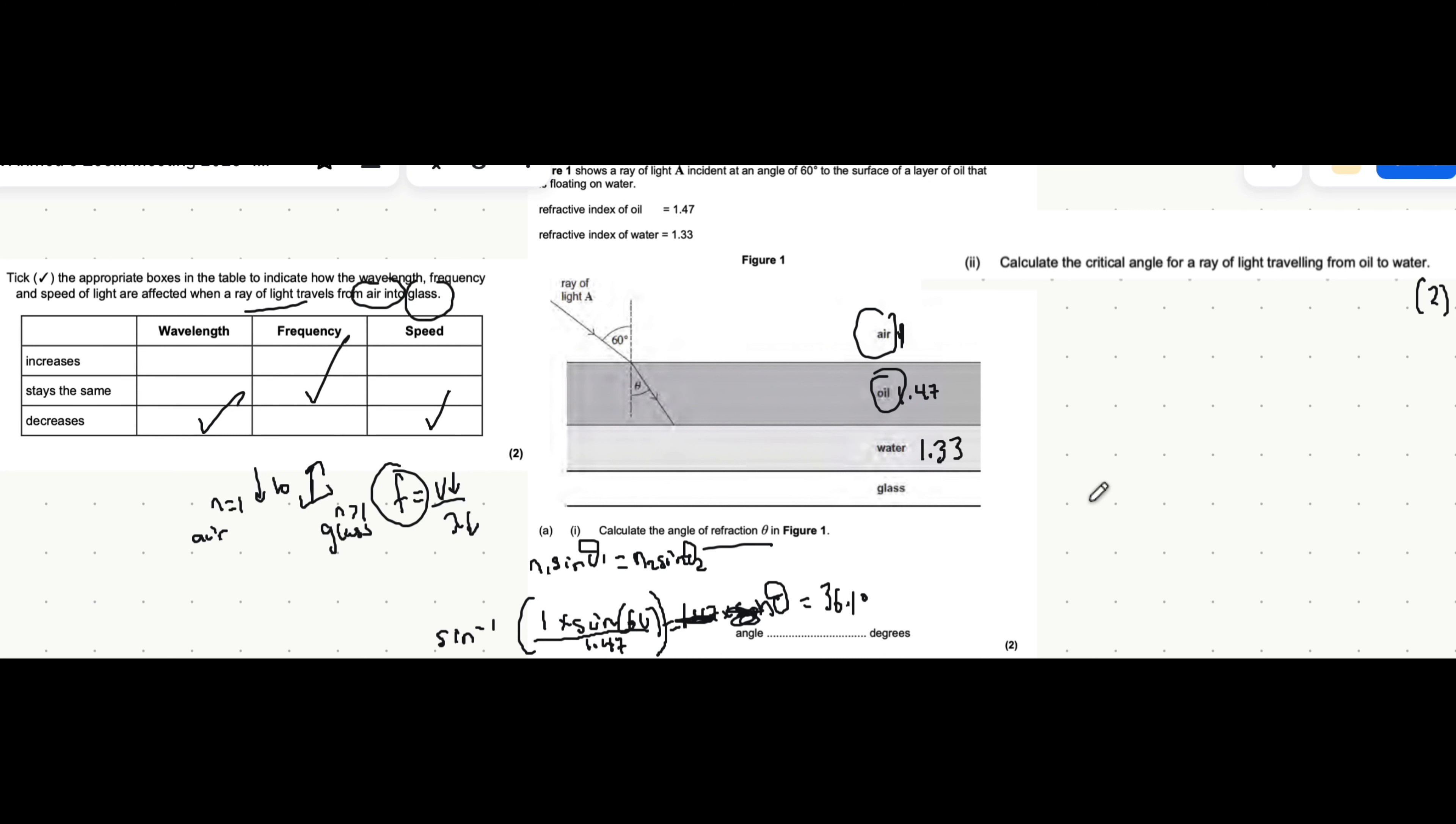And you get 36.1 degrees. So that's how you use Snell's law. Moving on, it's asking you to find the critical angle. There's a specific equation for this, which is sine of the critical angle is N2. Actually, I'm going to go through that in a little while.